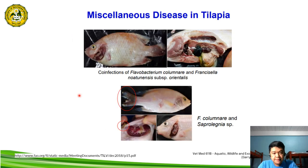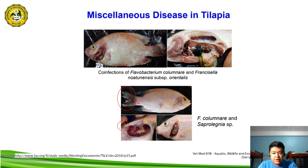There is also another co-infection of Flavobacterium columnare and Francisella noatonensis orientalis, as well as a co-infection between Flavobacterium columnare and Saprolegnia species, involving wrapping of the fins.